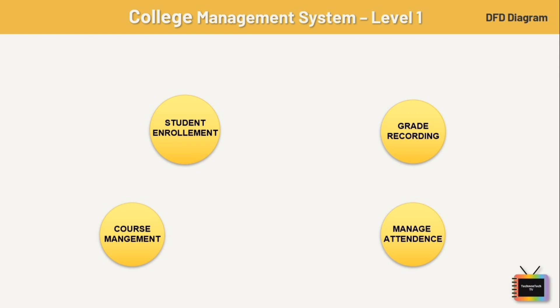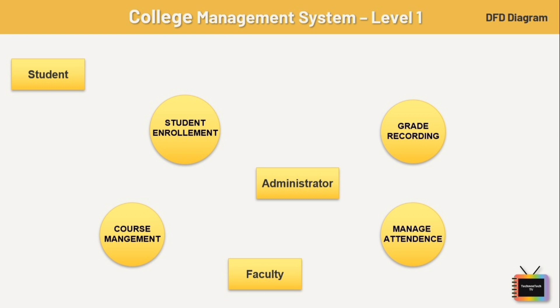Last, we have manage attendance, which allows faculty to record attendance for students. All four processes are sub-processes of college management. Here, we also have three entities: student, which interacts with the system for tasks such as enrollment and course registration; faculty, which accesses the system to manage courses, grades, attendance, etc.; and administrator, who oversees the entire system and handles user management.